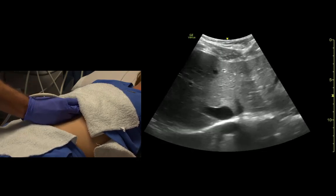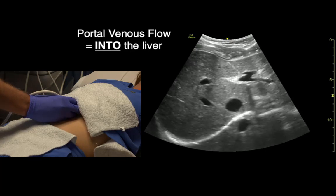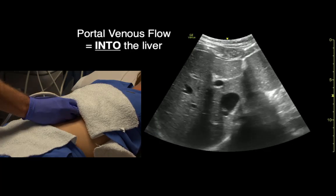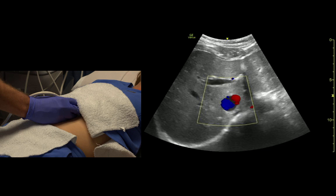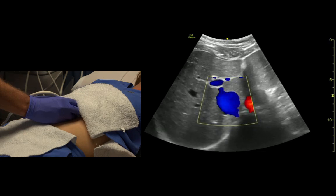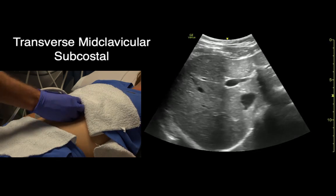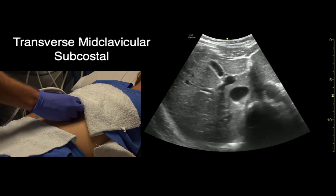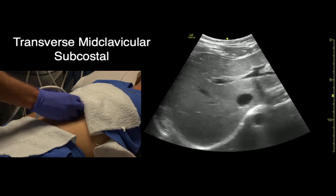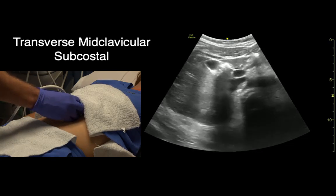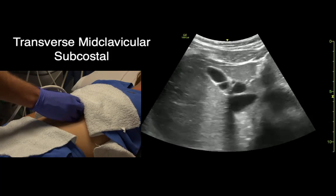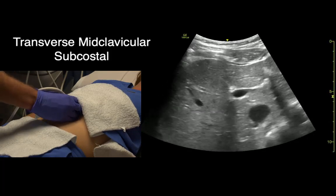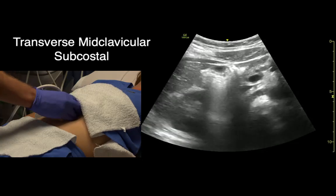Hepatic venous blood drains out of the liver. If we fan down towards her feet, we can see the gallbladder come into view. Right there — her gallbladder has a little fold. The gallbladder is also a landmark to divide the right and left lobes of the liver.